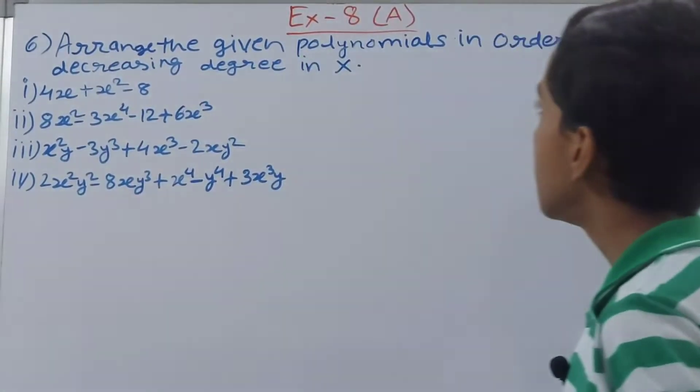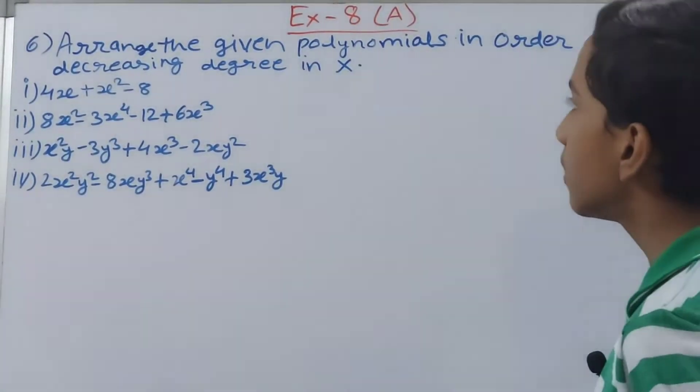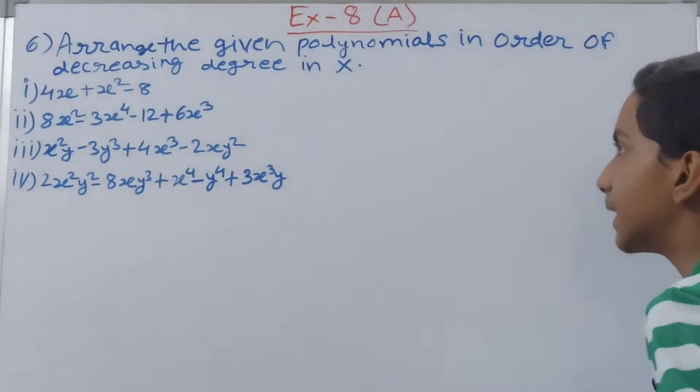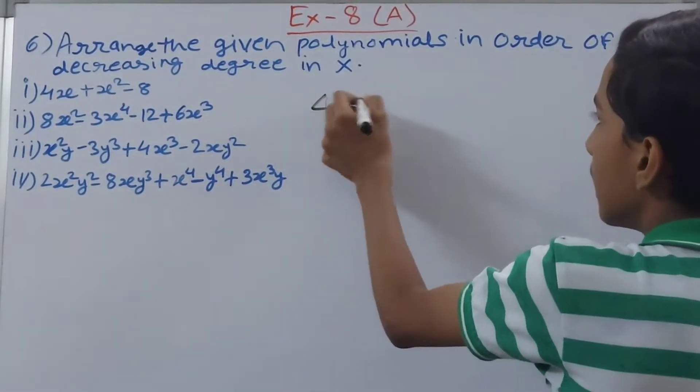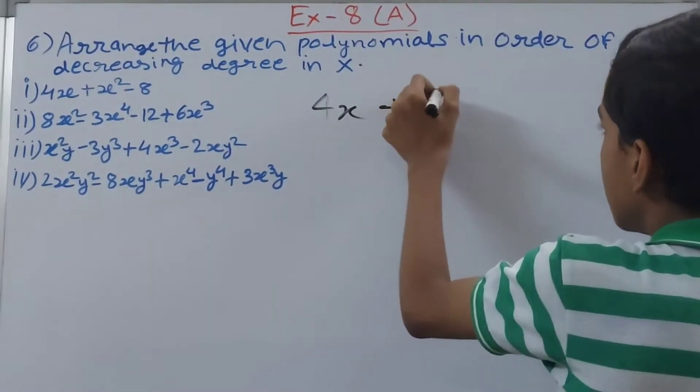This question says arrange the given polynomials in order of decreasing degrees in x. First one is 4x plus x square.